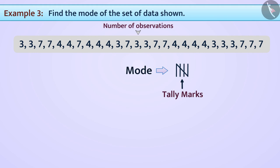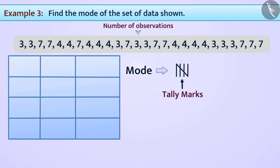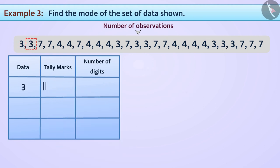For this, we will first create a table. We will place the data in the first column, the tally marks in the second column and the number of digits in the third column. Let us go from left to right and make tally marks.